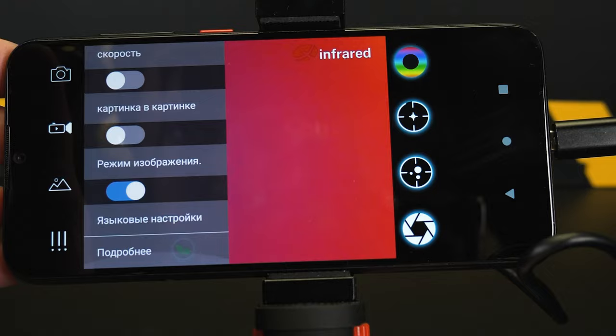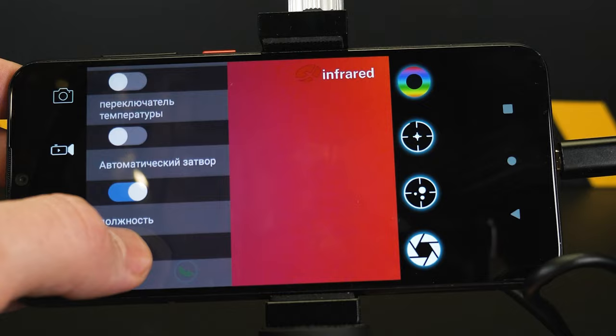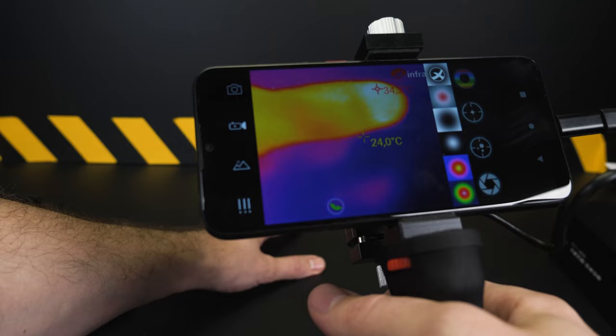There are a lot of different settings in the menu. There is an aiming grid, object display modes, and even an object temperature scanner. In other words, everything you need for thermal imaging hunting.